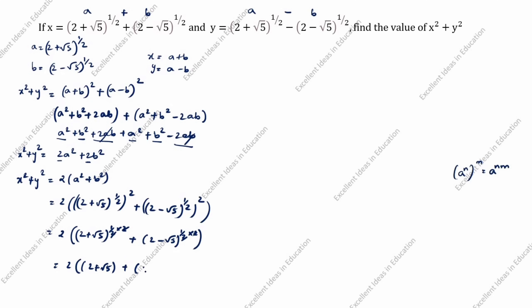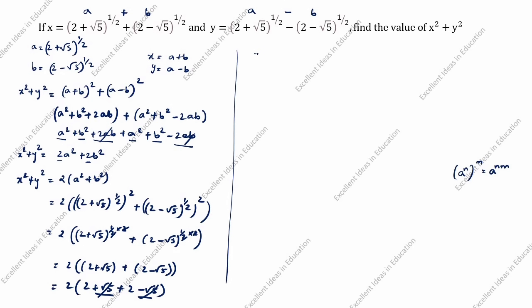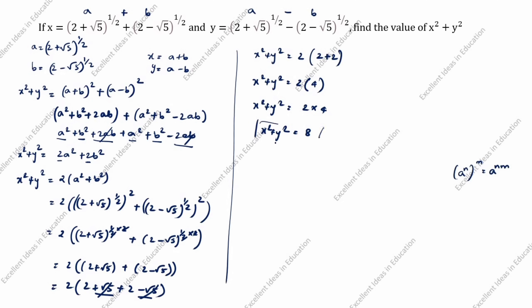So x² + y² = 2[(2+√5) + (2-√5)]. Removing the bracket: 2+√5 + 2-√5. The +√5 and -√5 cancel, giving 2+2 = 4. Therefore x² + y² = 2 × 4 = 8. The answer is 8. Thanks for watching this video.